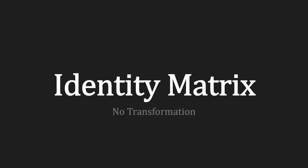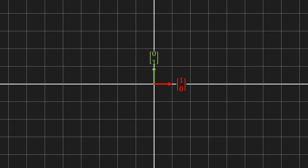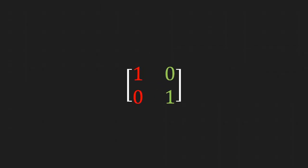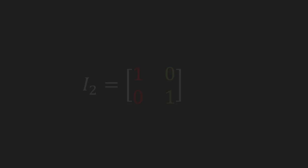We'll now go over a bunch of specific matrices and transformations, starting with the identity matrix, which I like to think of as just no transformation at all. If we don't perform any transformation, then e-hat x ends up at 1, 0 and e-hat y ends up at 0, 1. We package all of this in the identity matrix, written as I subscript 2, where 2 indicates a 2×2 matrix. An identity matrix is always filled with zeros, except for the diagonal from the top left to the bottom right corner, which is filled with 1s.